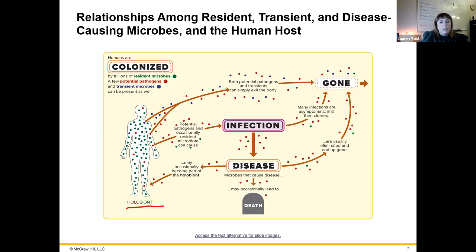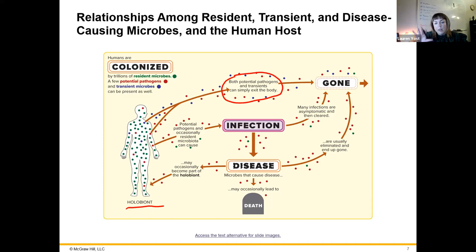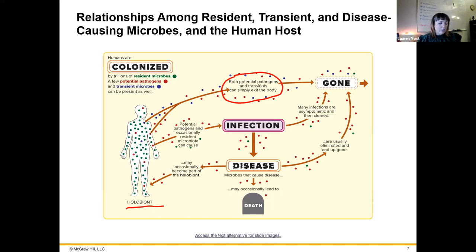We might have potential pathogens and just normal transient bacteria we might be exposed to in our lives. Some people have Staph growing on their skin normally. People can have Streptococcus pneumoniae, the major cause of pneumonia, as part of their normal respiratory biome. However, it doesn't always cause infection, which would be growth in tissues where it shouldn't be — overgrowth, setting up shop in areas where it didn't belong. Like E. coli migrating and causing urinary tract infections.